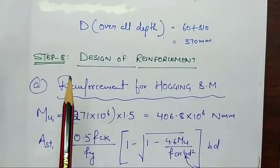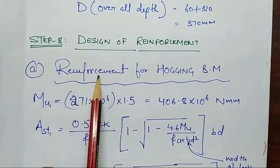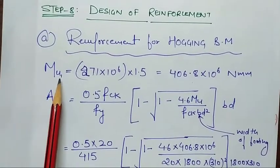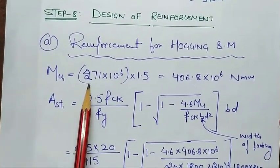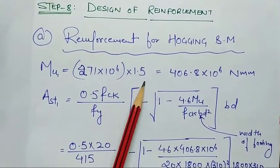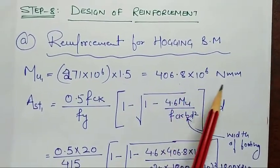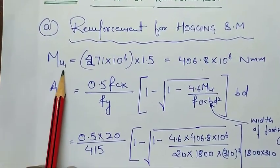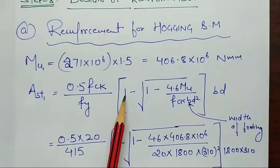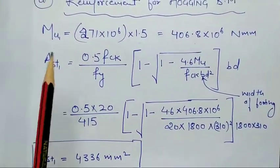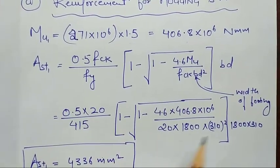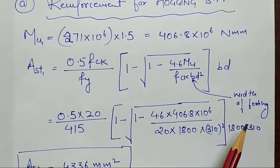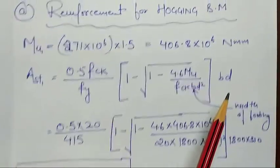Now in step 8, we are going to start designing the reinforcement. First, we design reinforcement for the hogging bending moment, which is the maximum bending moment. The value of mu1 — the factored maximum bending moment — the actual value was 271×10⁶ N·mm, multiplied by 1.5 to make it factored gives 406.8×10⁶ N·mm. The area of steel Ast1 is calculated using the standard equation with fck = M20, fy = 415, mu = 406.8×10⁶, b = 1800 mm, and d = 310 mm.